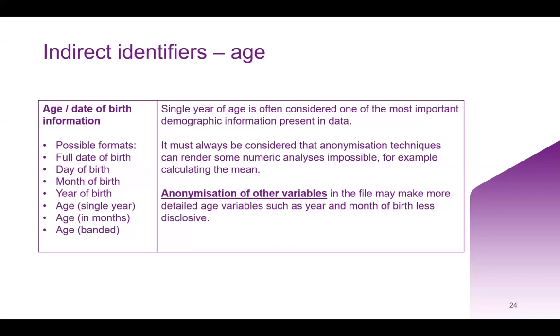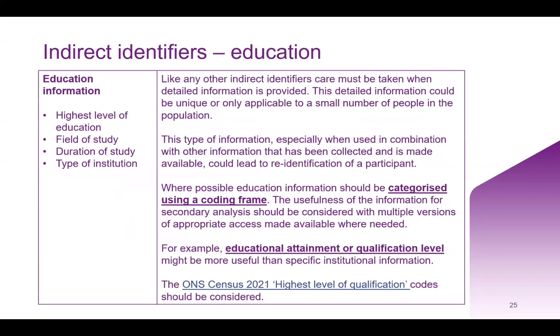While detailed age data can enhance the quality of demographic analysis, it also increases the risk of identifying individuals where outliers are present or where information in combination with other indirect identifiers is unusual — like being quite young and receiving treatment for something. Anonymization techniques can render some numeric analysis, such as calculating the mean, impossible. For example, if ages are grouped into bands, the precise calculation of an average age would be less accurate. Where precision is needed, consider reducing precision on other characteristics while still allowing for central tendency to be calculated.